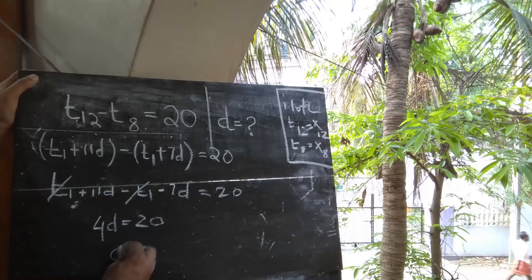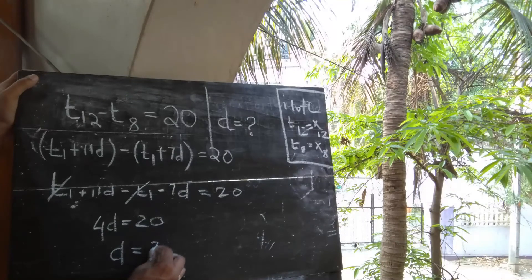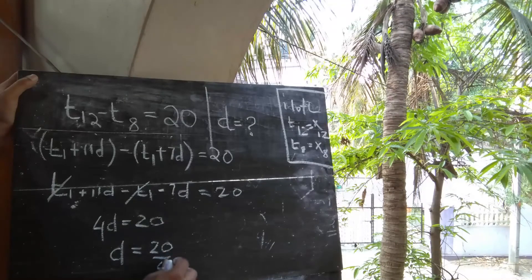Now d is equal to 20 by 4, which is equal to 5.